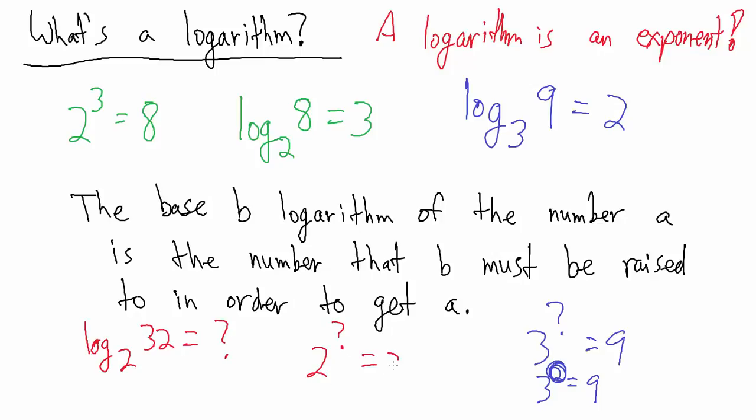So what number must 2 be raised to in order to get 32? In other words, 2 to what number equals 32? Well, 2 to the fifth equals 32, right? So if we take 2 raised to the fifth power, then that gives us 32.